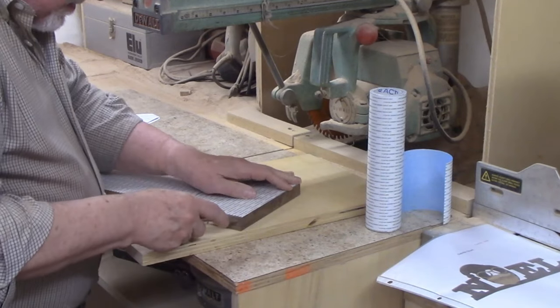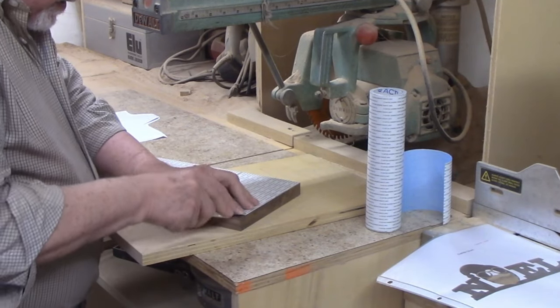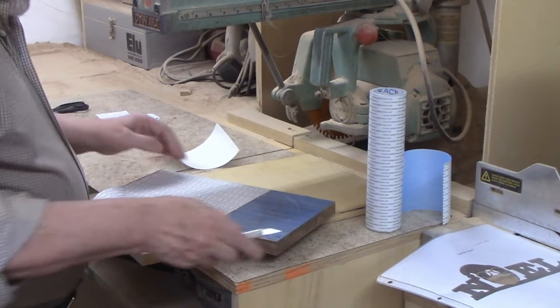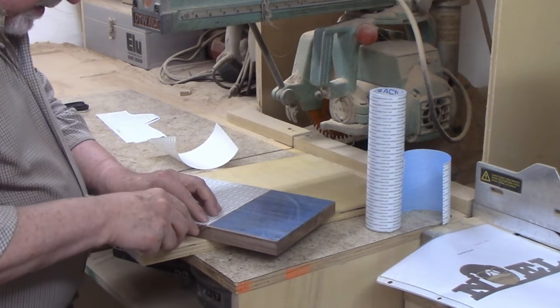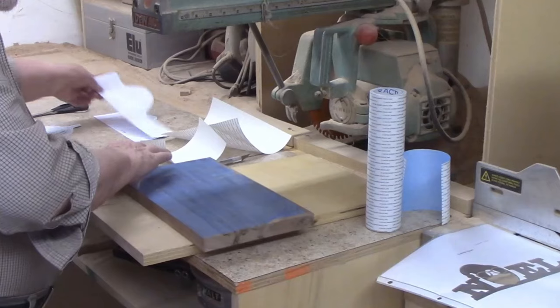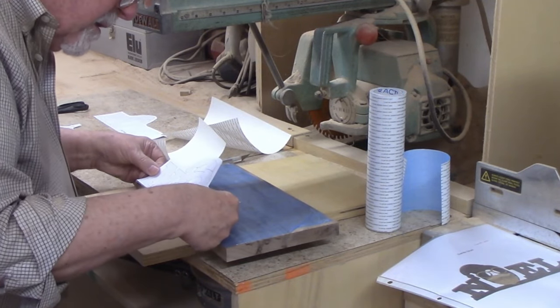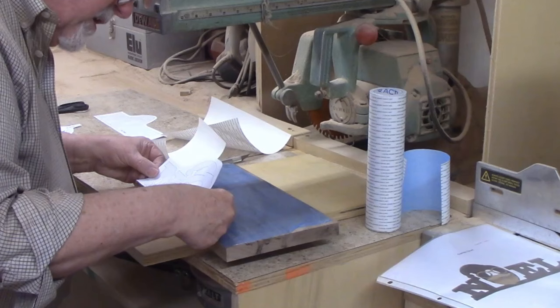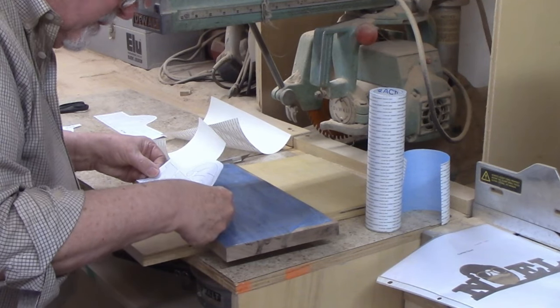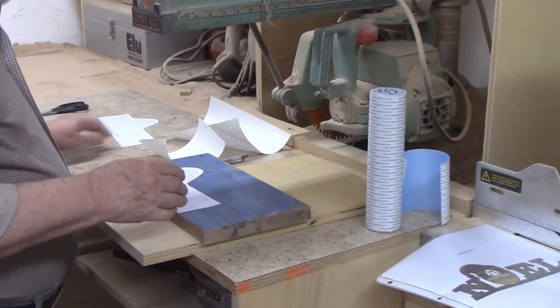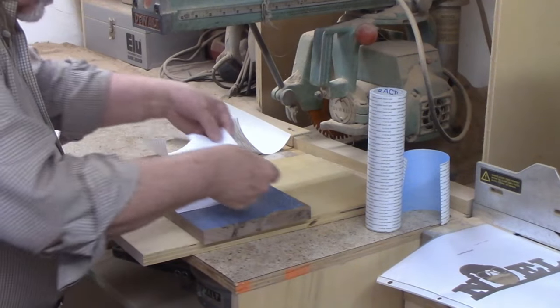Next you peel off the backer and apply the pattern to the tape. The tape holds the patterns in place while you cut but it peels off easily when you're done and it doesn't leave any sticky residue behind. By staggering the patterns and lining one up with each edge of the board I was able to make efficient use of the wood. There will only be two small scrap pieces left after I cut out the Noel pattern. You should get in the habit of laying out your patterns for the most efficient use of the wood.